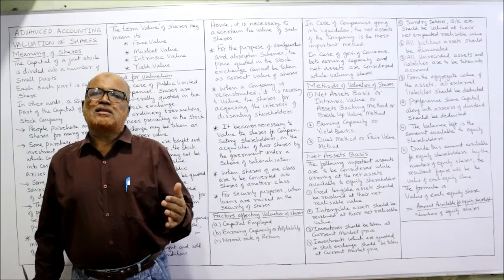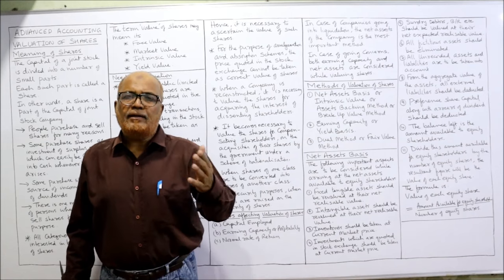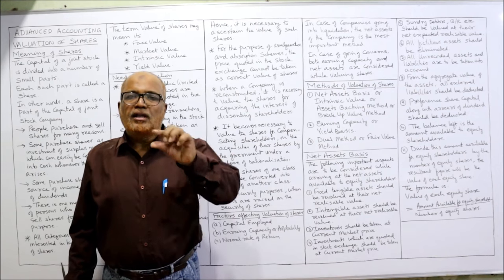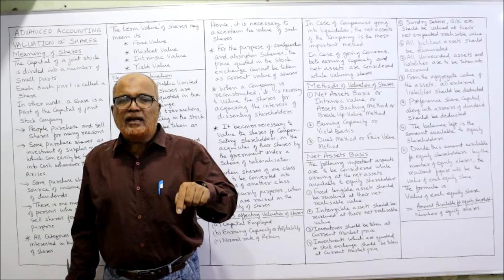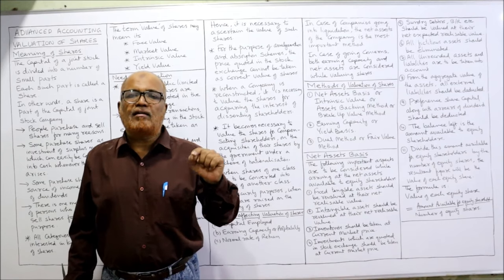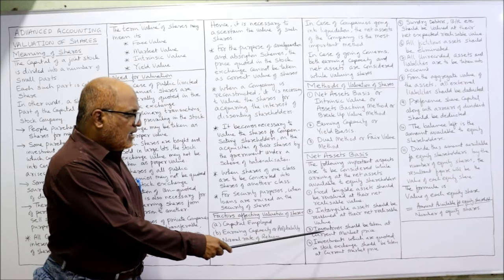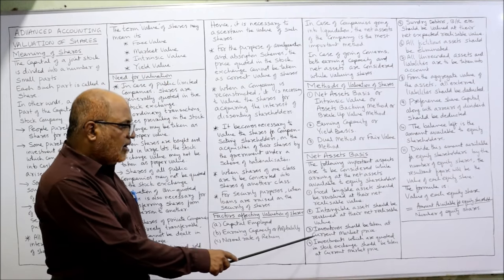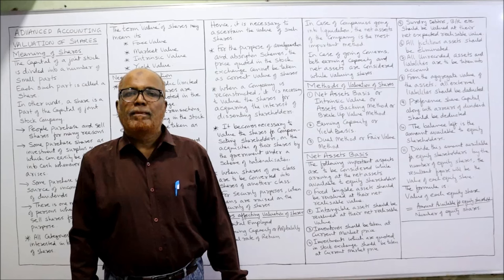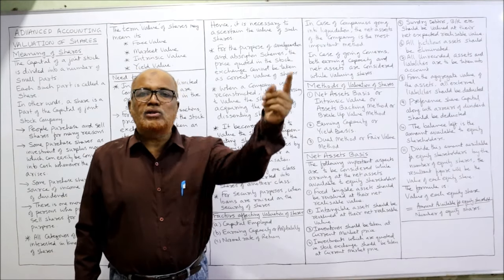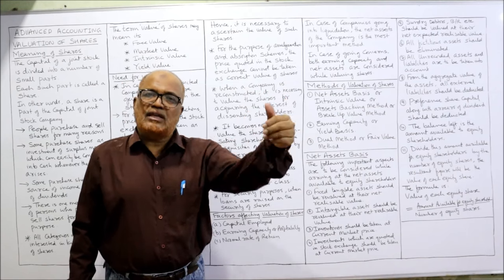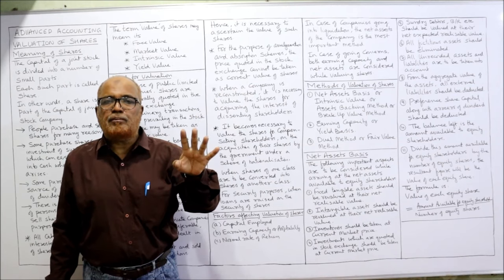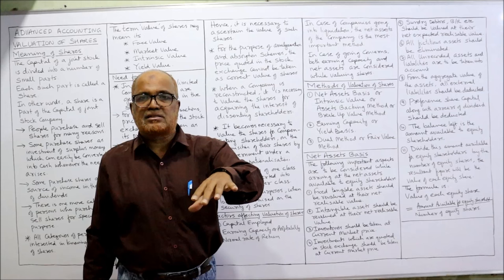Second, intangible assets — like goodwill, patent, copyright, trademark, brands — will also be taken at their net realizable value. Third, inventories, which are a current asset, should be taken at the current market price. If the market price is not given, we can take the balance sheet value, but whenever the market price is given, always take the market price whether it is more or less than the book value.